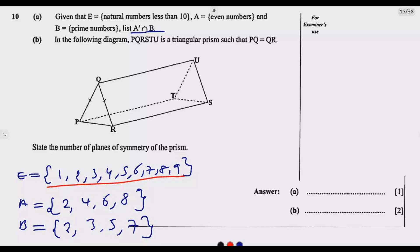Then we are looking for A complement intersection B, so we need to find A complement. So what are the elements that are found in E, but not found in A? That's A complement. So we are saying, what are elements that are not found in A, but they are found in the universal set? So we have 1, 2 is found here, so we have 3, then we have 5, then we have 7, then we have 9.